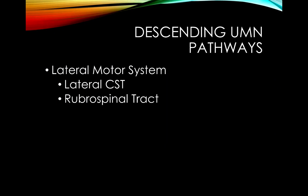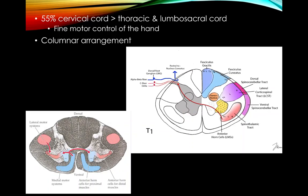Let's go through the descending upper motor neuron pathways, starting with the lateral motor system. The two pathways are the lateral corticospinal tract and the rubrospinal tract. The corticospinal tract is probably the pathway we'll discuss most in this course — it supplies anterior horn cells throughout the entire spinal cord. About half of the fibers synapse in the cervical spinal cord, meaning the corticospinal tract is more invested in the upper extremity, with its strongest action being fine motor control of the hand — typing, writing, playing a musical instrument.